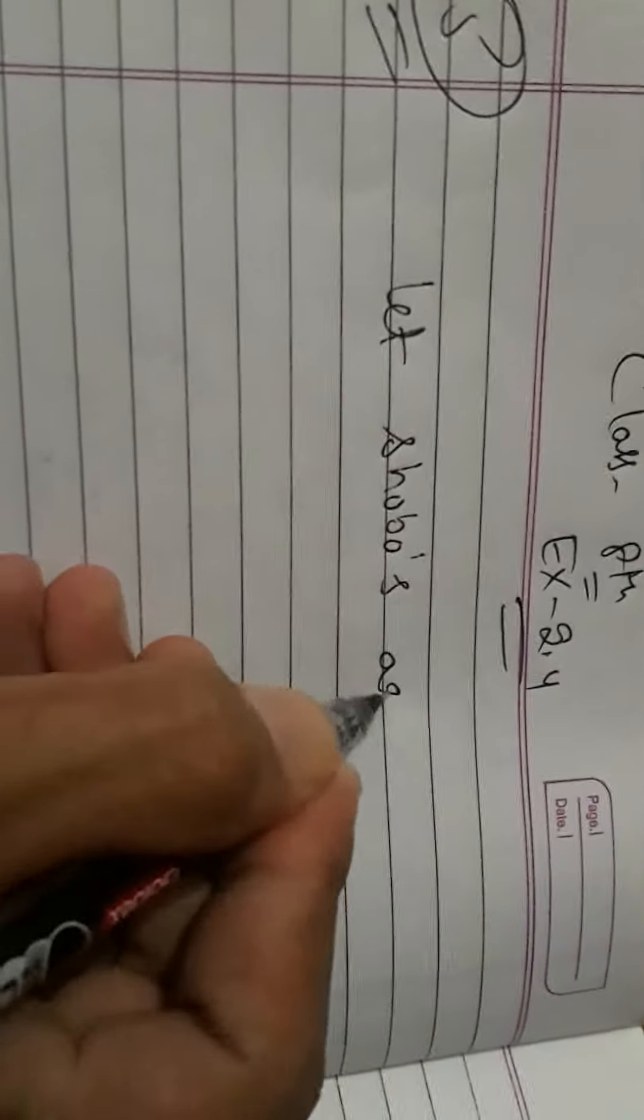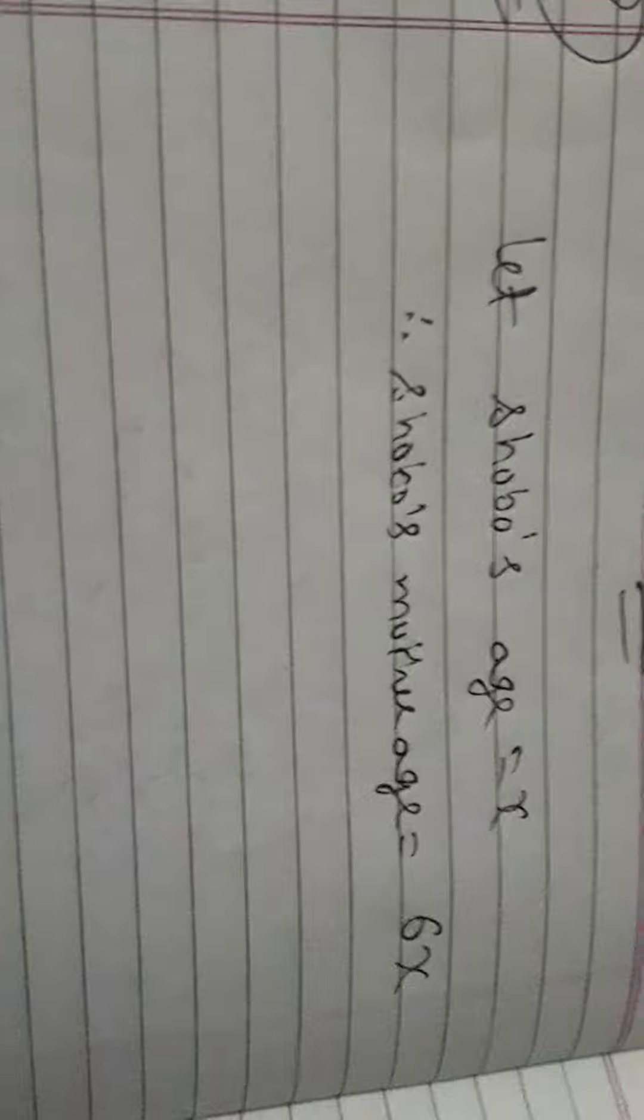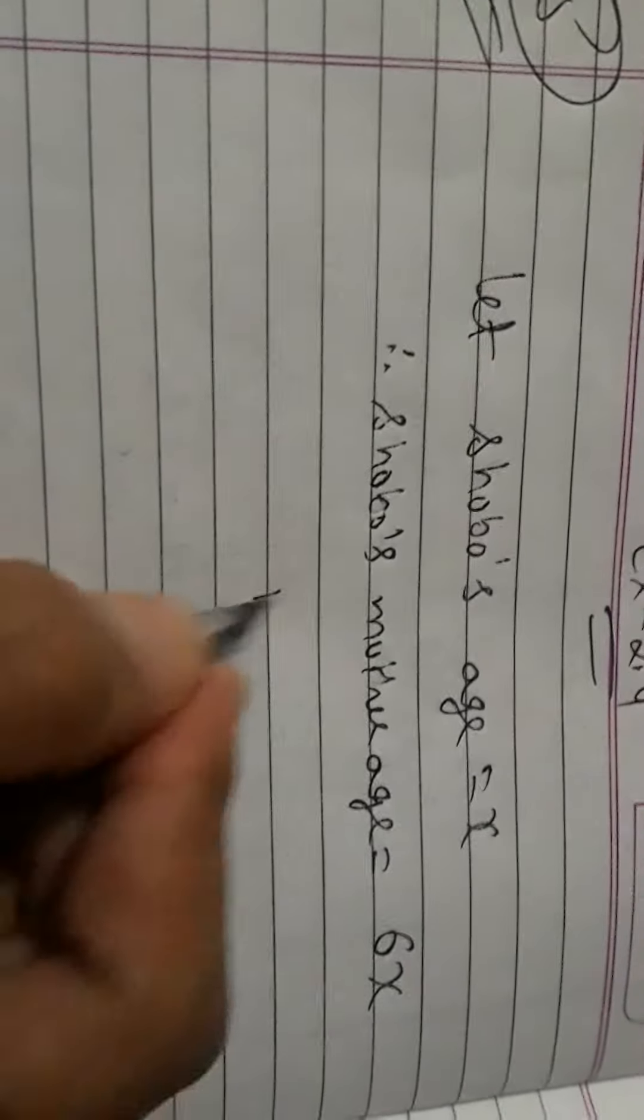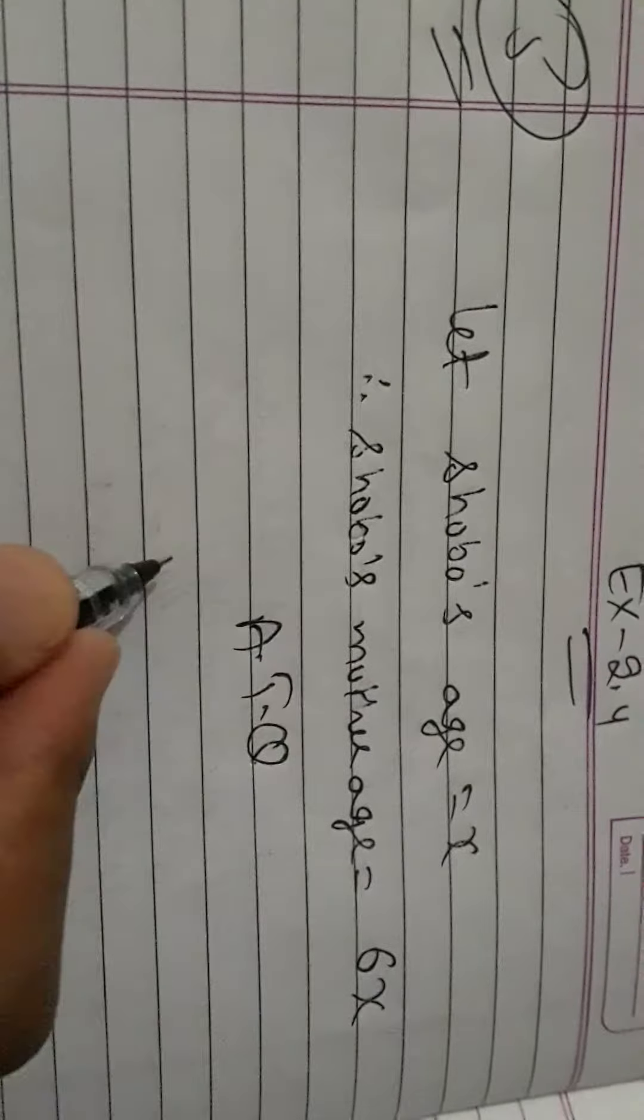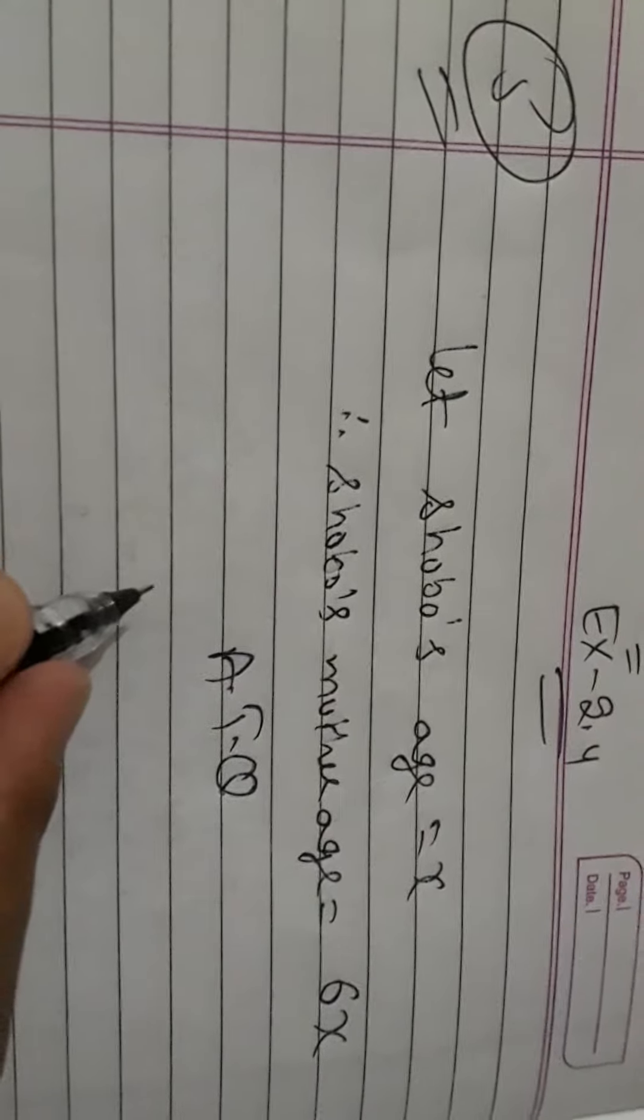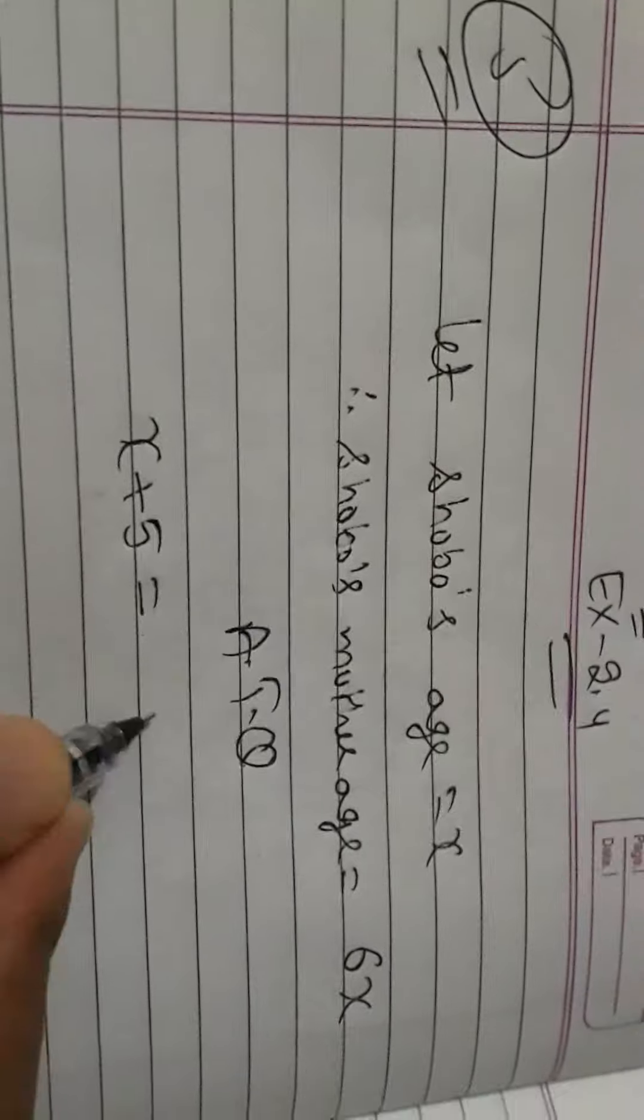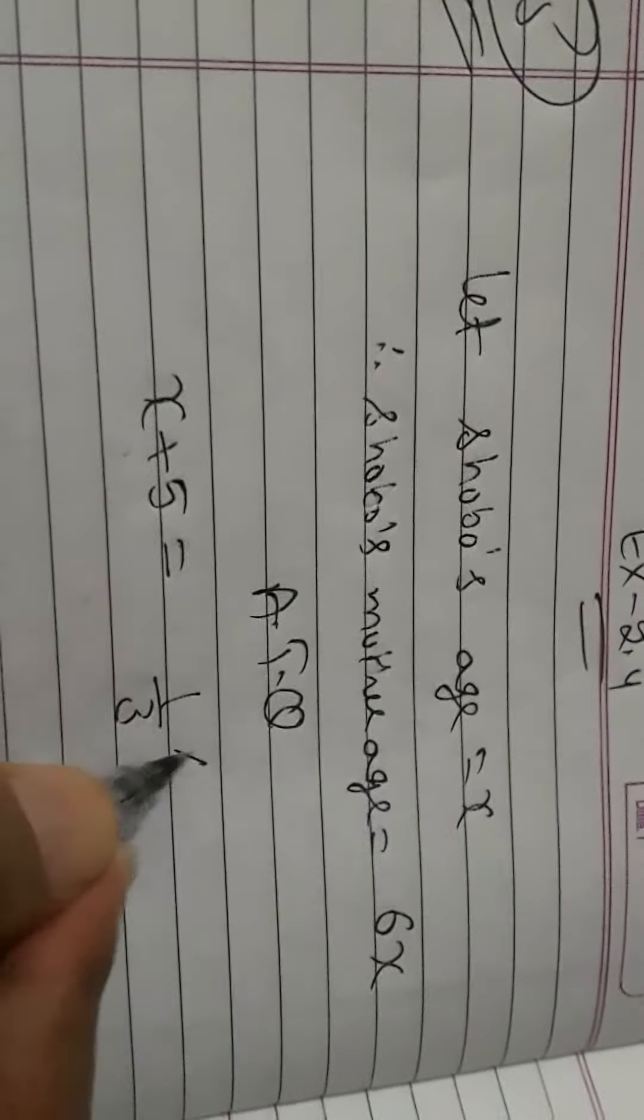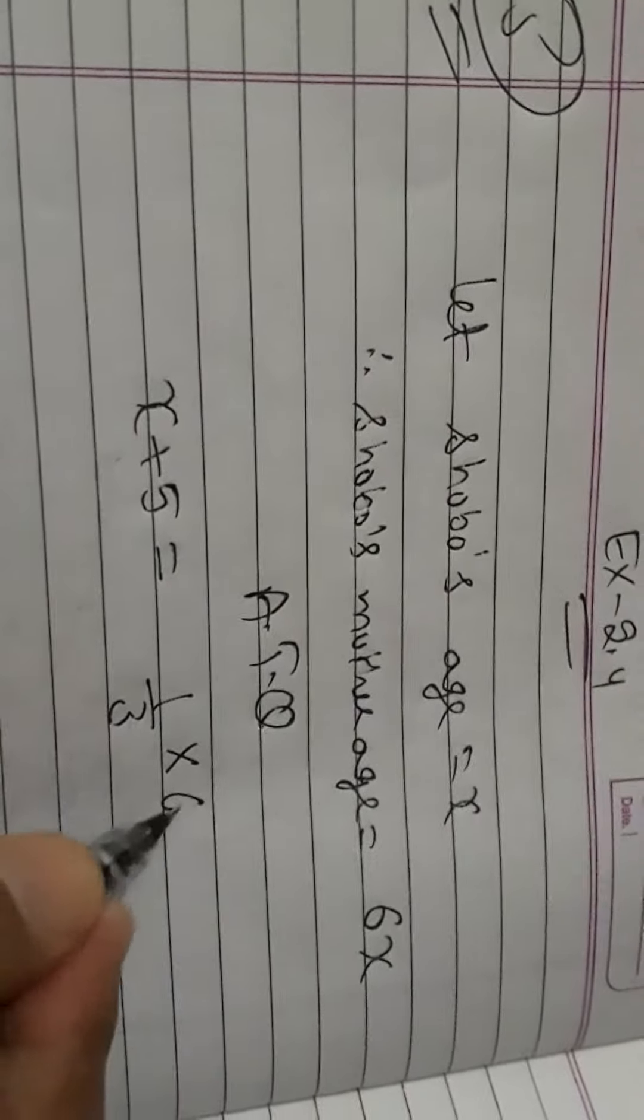Let Shubo's age be x years. Shubo's mother's age is 6x according to the question. After 5 years, Shubo's age will be x plus 5, which equals one-third of his mother's present age, 6x.